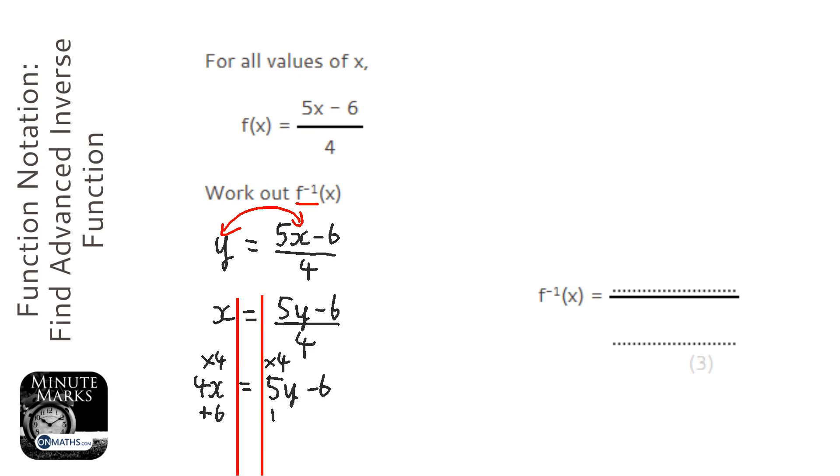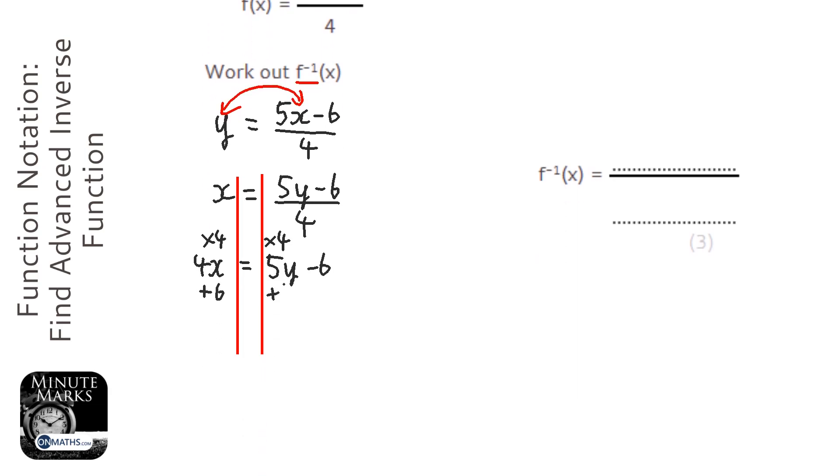I'm going to add 6 to get that 6 across. I have to move down a little bit. So 4x plus 6 equals 5y.